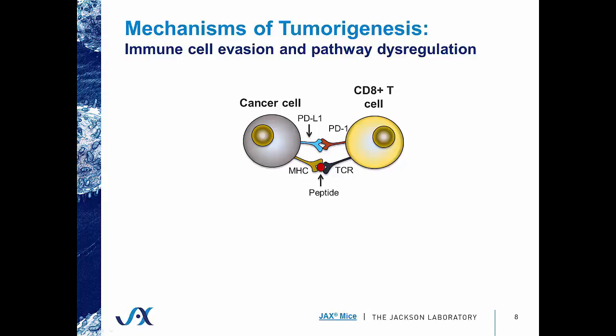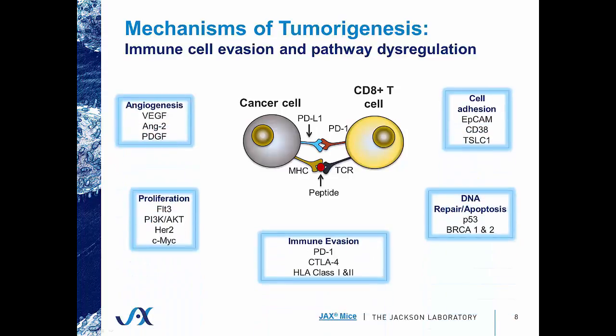During tumorigenesis, cancer cells learn different ways to overcome and evade immune cell recognition. One way they do this is by expressing the PD-1 ligand, PD-L1, which effectively shuts off T cell activation, causing those T cells to become anergic. There are other proteins that are dysregulated during tumor formation, including proteins involved in angiogenesis, proliferation, DNA repair, apoptosis, and cell adhesion. By targeting these antigens through blocking corresponding receptors and downstream effectors, immuno-oncology compounds can be used to restore these imbalances and allow the immune system to detect and attack cancer cells.